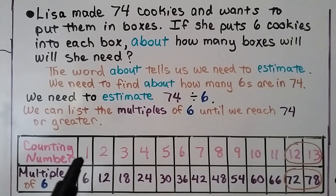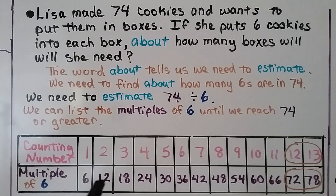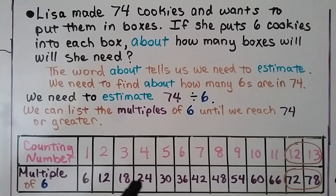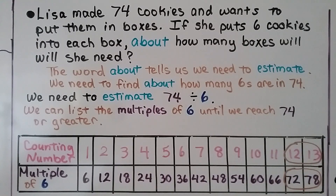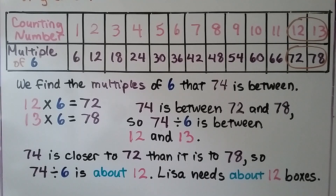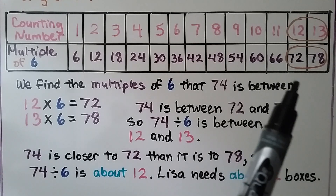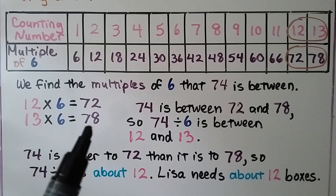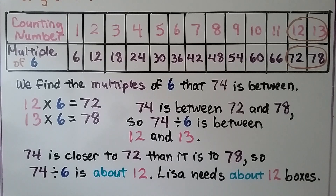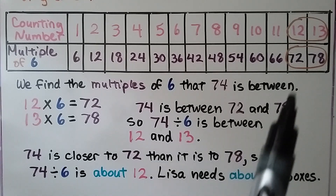We can list the multiples of 6 until we reach 74. We have our counting numbers going in order: 1, 2, 3, 4, 5, all the way up to 12 and 13. The multiples of 6 are 6, 12, 18, 24 — and we continue: 1 times 6 is 6, 2 times 6 is 12, 3 times 6 is 18, 4 times 6 is 24, all the way up to numbers around 74. We find the multiples of 6 that 74 is between — it's between 72 and 78. So 74 divided by 6 is between 12 and 13.